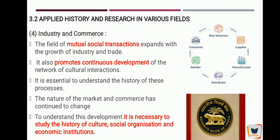Industry and commerce is very important. Even for buying Maggi, there is a full chain: first maida is processed, then the manufacturer fills it in packets, then it goes to the distributor, wholesaler, and finally the retailer. This entire chain involves mutual social transactions — and if these transactions happen, then industry and trade grows. It promotes the continuous development of a network of cultural interactions: raw material, supplier, manufacturer, distributor, retailer, and finally consumer. It is essential to understand the history of these processes to improve them.